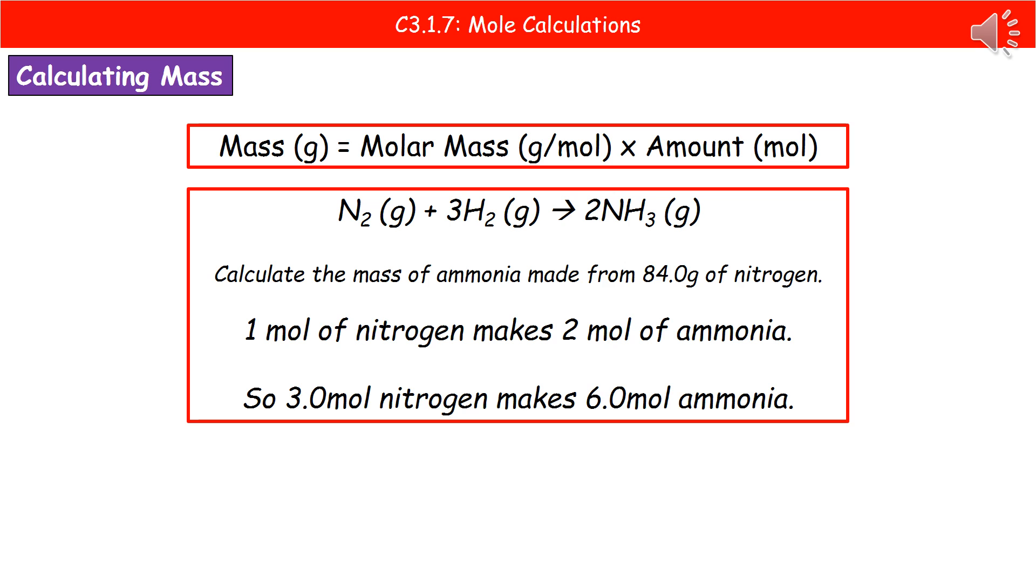The next thing we need to do is look at our balanced equation. What we can see in that is that 1 mole of nitrogen makes 2 moles of ammonia. Because N2 has no number in front of it, that tells us there is just 1 mole of nitrogen. And then on the right-hand side, we can see that 2 in front of our ammonia tells us that we're making 2 moles. So we have a ratio there. 1 mole of nitrogen makes 2 moles of ammonia.